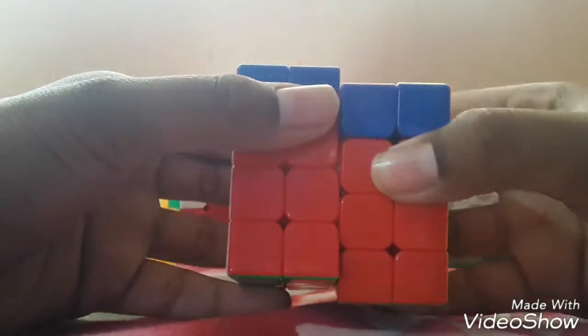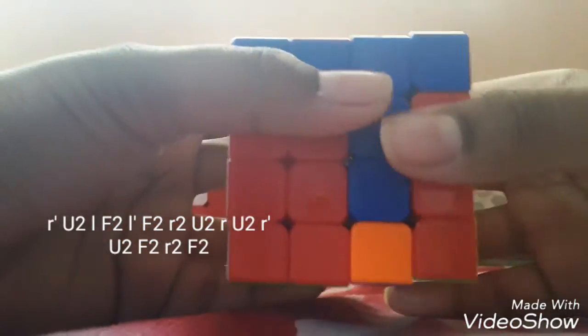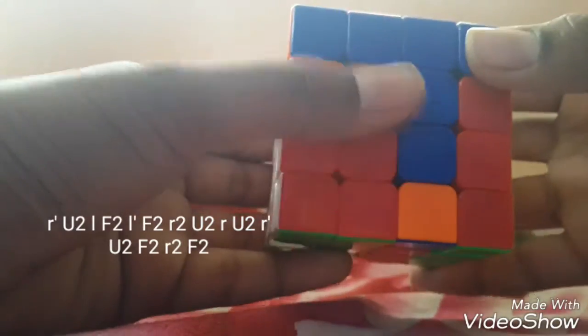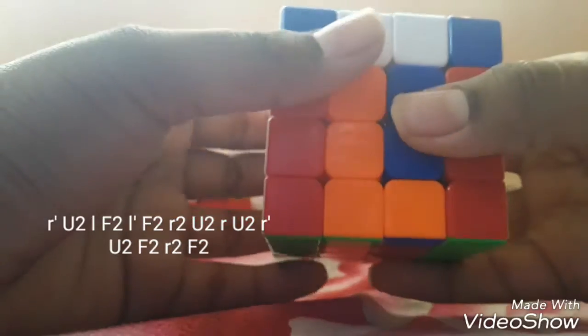Here we go: r, right inner layer inverted, only inner layer, then U outer layer 180 degrees, the left inner layer clockwise l. This is the left inner layer, and the front two times F2, then again left inner layer l and down D clockwise, then front two times F2.